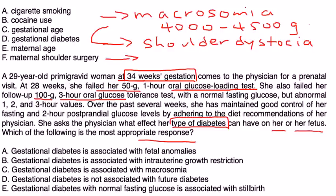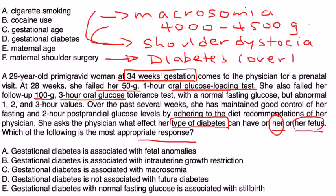Another issue that can happen to the mother herself is that after the pregnancy, she can develop diabetes — what we call overt diabetes, meaning diabetes when she's not pregnant. Gestational diabetes is indeed associated with future development of diabetes; it is not the case that gestational diabetes has no association with future diabetes.